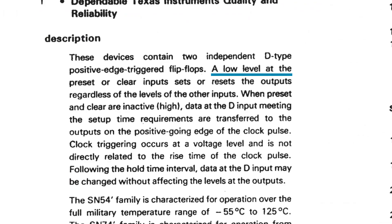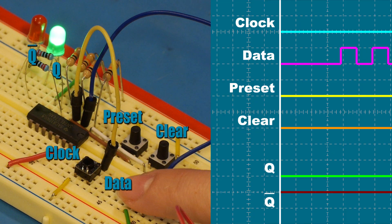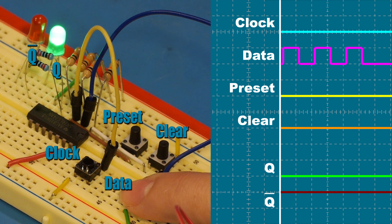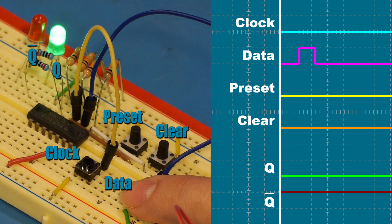You can actually find this information on the datasheet. A low level at preset or clear, that tells us these inputs are active low, sets or resets the outputs, regardless of the levels of the other inputs. Let's move on to the data pin. The data signal is only sent to the outputs on the positive edge of the clock pulse. Changing the data signal alone does nothing.